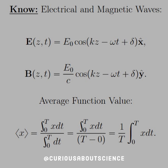The average function value is defined as the integral of X dt over the integral dt. Since the bottom integral evaluates to T, we write it as (1/T) times the integral from 0 to T of X dt. Pretty simple.